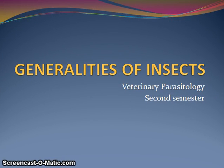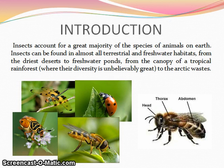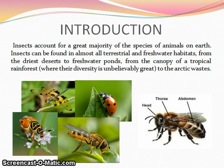Generalities of Insects — Veterinary Parasitology. With around 1 million named species and perhaps several times that number unnamed, insects account for a great majority of the species of animals on earth. Insects can be found in almost all terrestrial and freshwater habitats, from the driest deserts to frozen tundra, from the canopy of a tropical rainforest to the arctic wastes. There are roughly 1 million described species of insects, and experts estimate that there are probably between 5 to 6 million species yet to be identified.